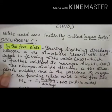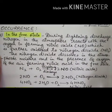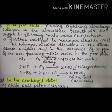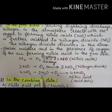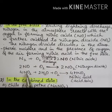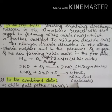Just look at these equations. First, nitrogen reacts with atmospheric oxygen to form nitric oxide. Then this nitric oxide reacts with oxygen to form nitrogen dioxide. Then nitrogen dioxide reacts with atmospheric moisture or rain and oxygen to form nitric acid, which falls as acid rain.